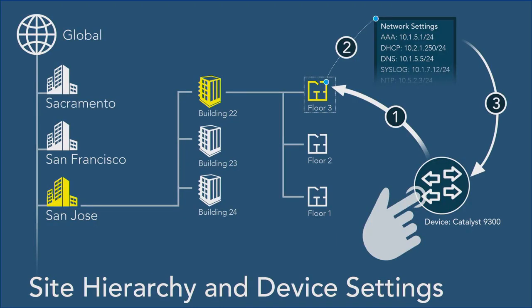The design aspect is really about creating a site hierarchy. In this scenario I have three locations — Sacramento, San Francisco, San Jose — and I literally build this out right in the dashboard. I put the names of these places in; in San Jose I have three buildings. Then I set the network settings for DHCP, DNS, and syslog by filling in a form — it's very simple. When I'm ready to provision, I say these five switches are going to San Jose, Building 22, Floor 3, and they get these settings. I hit submit, and they've got all the configurations. It's taking the complexity out of your network and reducing it dramatically, and the likelihood of making a mistake goes down dramatically.